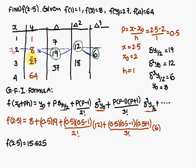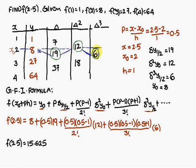To summarize: in Gauss forward interpolation, from x₀ and y₀ draw a horizontal line, then construct a lower triangle. The corresponding values of the lower triangle are the values you substitute into the Gauss forward interpolation formula. Thank you.